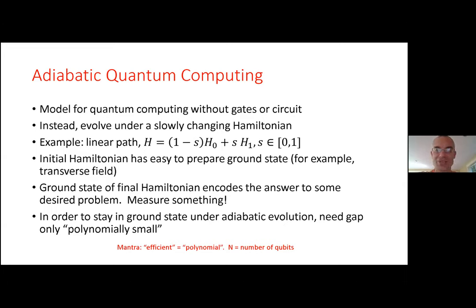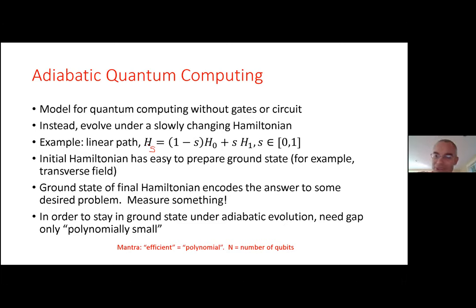Adiabatic quantum computing is a different model. Instead of gates, you have a Hamiltonian H_s that changes as a function of a parameter s in the interval [0,1]. The simplest case is a linear interpolation: H_s = (1−s)H₀ + s·H₁, which linearly interpolates between H₀ at s=0 and H₁ at s=1.